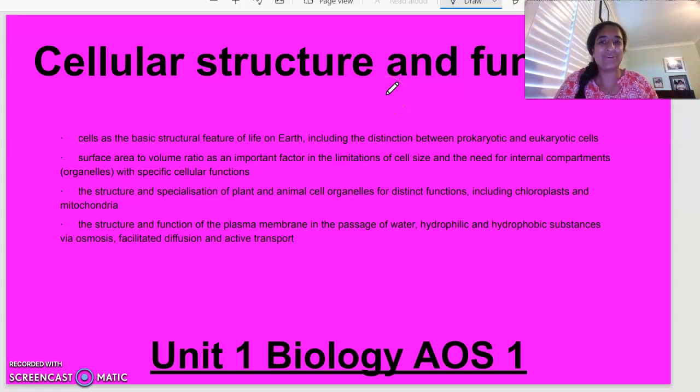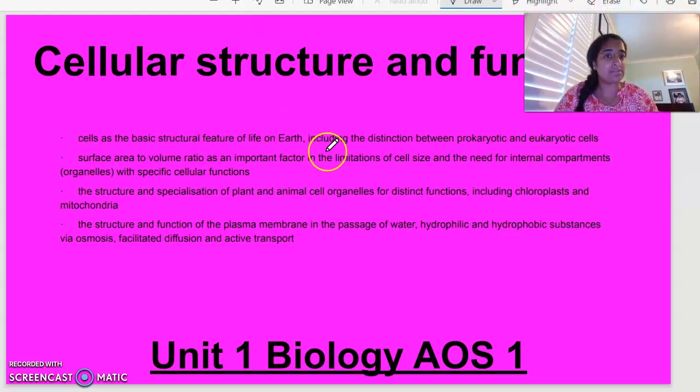Hello everybody, welcome to Unit 1 Biology Area Study 1. Today we are looking at cellular structure and function. The dot points we're going to focus on today include cells as the basic unit of life, the difference between prokaryotic and eukaryotic cells, surface area to volume ratio, cell organelles for plant and animal cells and their functions, and identifying the structure and function of the plasma membrane and how different things can cross it. Remember that these videos are a summary for revision, not to learn all of your content from, but they are good to use for study.